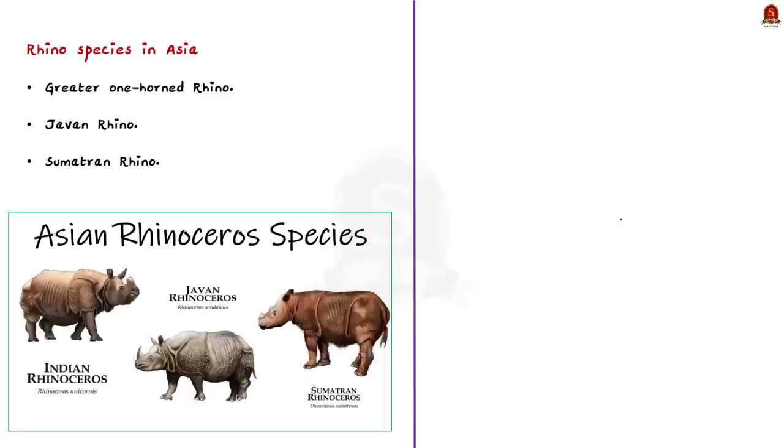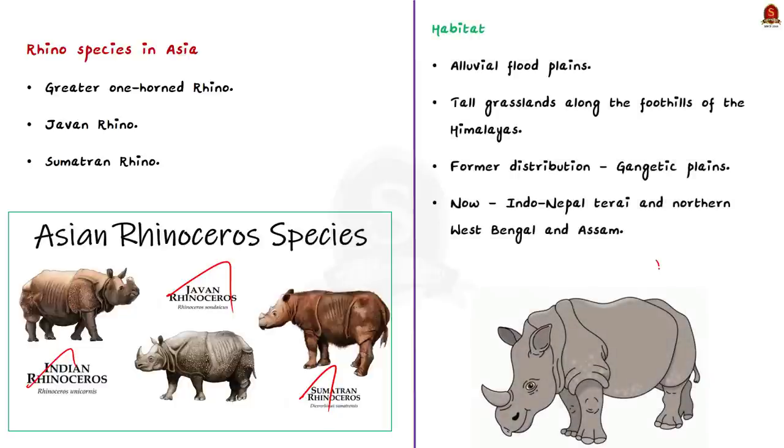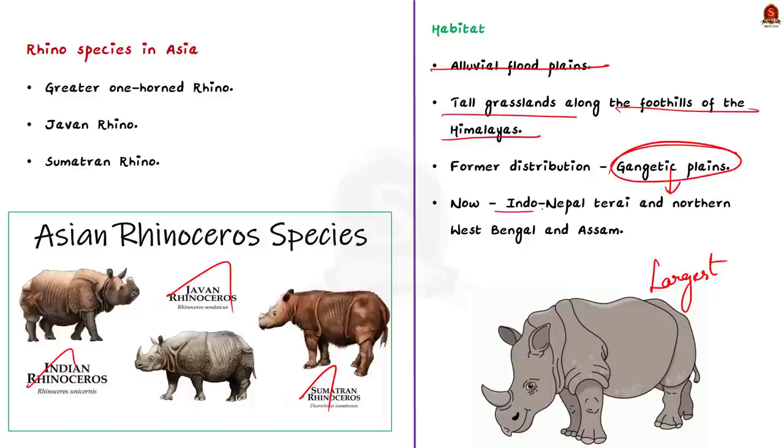Now using this as an opportunity we are going to revise about one-horned rhinos. See have this basic understanding. There are three species of rhinos in Asia. They are great one-horned, Javan and Sumatran rhinoceros. Among these three the great one-horned rhino is the largest one. Now talking about the habitat. The preferred habitat of an Indian rhinoceros is alluvial floodplains. They also love areas containing tall grasses along the foothills of the Himalayas. Formerly they were extensively distributed in the Gangetic plains. But today the species is restricted to small habitat in Indo-Nepal Terai and northern west Bengal and Assam.